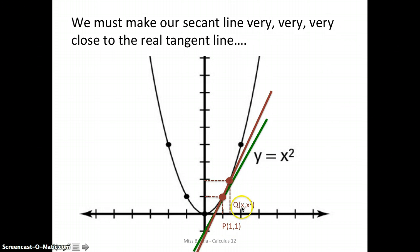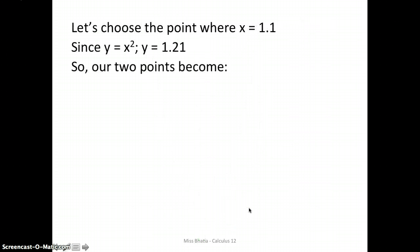So we have our original point P, and then we have Q, which is x, x squared, whatever that happens to be. So what we need to do is we need to choose a point where we're super close to our original point P, 1, 1. So we'll choose the point right next to it. So we'll choose where x equals 1.1. And since we know that y is x squared, we find that y is 1.21.